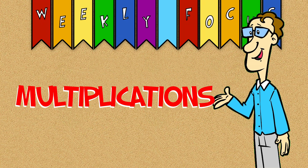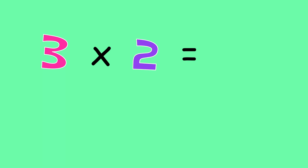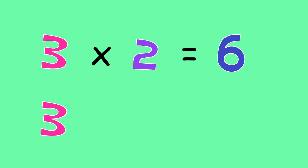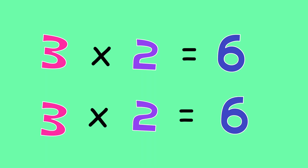Let's do multiplications. What does 3 times 2 equal? That's right, 6. 3 times 2 equals 6.